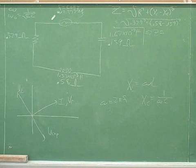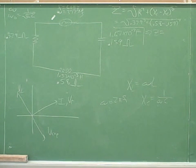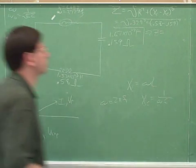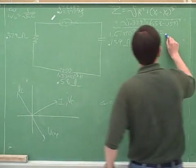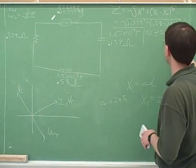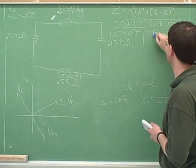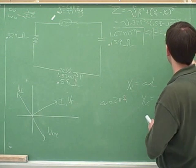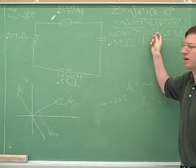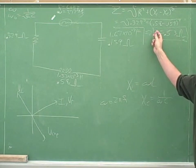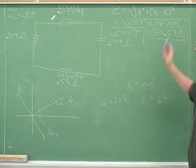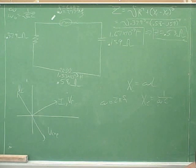That came out right — 0.53. And again, this is like a resistance, so it should be in ohms. So we've got this. What's the name of this concept? The impedance. It should be in ohms.